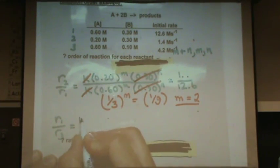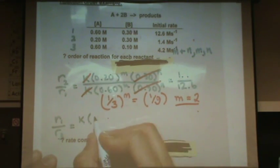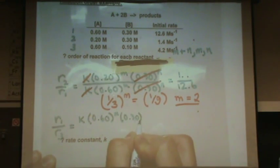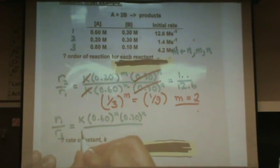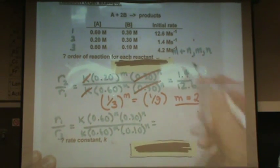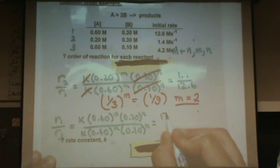We know the K is going to cancel. I'll write it anyways though. K times 0.60 to the m times 0.30 to the n divided by K times 0.60 to the m and 0.10 to the n. So I'm just filling in the blanks from the table. And that's going to be 12.6 over 4.2 for the rates.